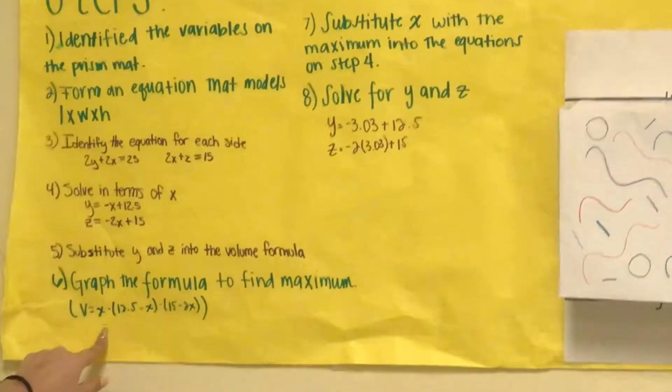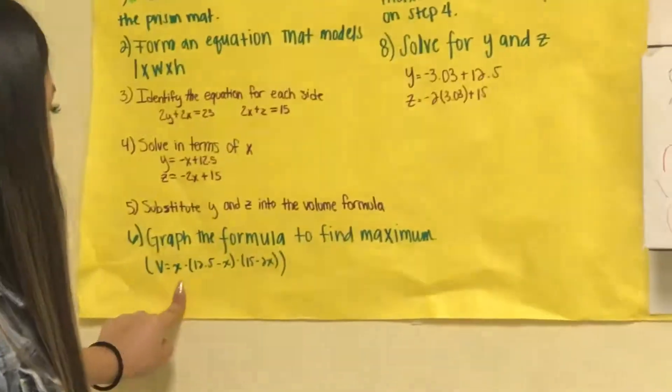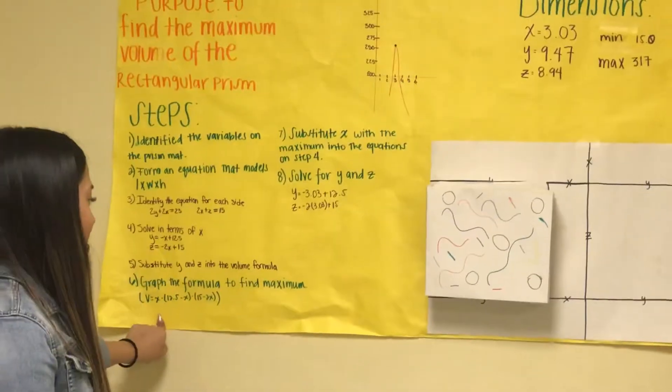Number six was to graph the formula to find the maximum, which the equation was V equals x times 12.5 minus x times 15 minus 2x.